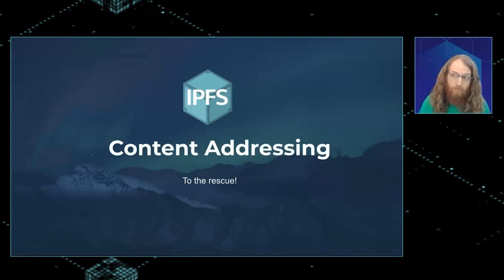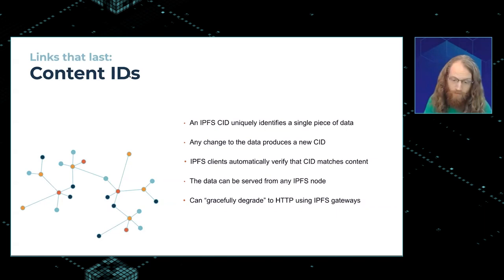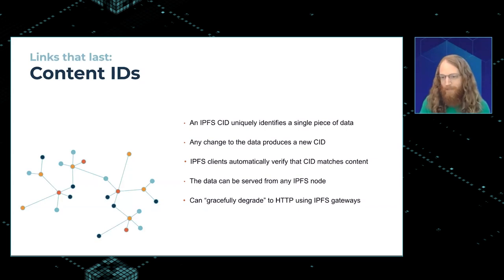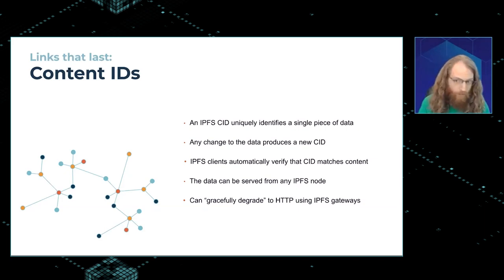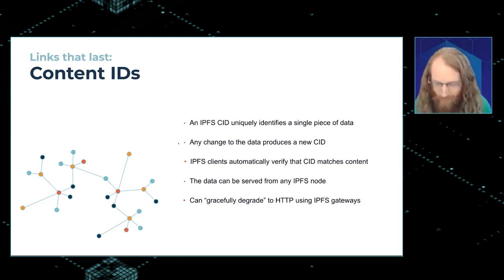IPFS uses content addressing, so now you have a link that actually can't change. The IPFS CID — content ID — will only ever point to the specific piece of data that created it. We think this is the best way to refer to data from a blockchain, because it will always point to the thing you thought it was pointing to when you created that record. On the retrieval side, you get built-in verification: when your IPFS client fetches the data, it compares the hash to the CID. If they're not a match, it just won't give you any data — so there's no real danger of having the rug pulled out from under you.